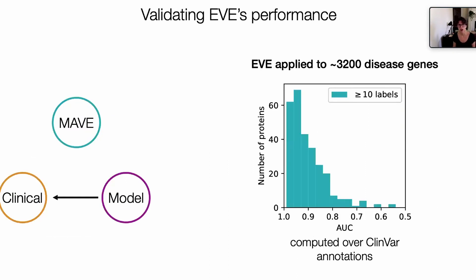So the question is, how can we validate a model of this type? The validation of in silico models — just like Claire was talking about yesterday morning — is very hard and very important. A model of this type has the advantage that because it is trained exclusively on sequences across diverse organisms, we can use the entirety of ClinVar annotations for doing validation instead of just like 10%. We computed the AUC over these ClinVar annotations and we see that our average AUC is about 0.92.